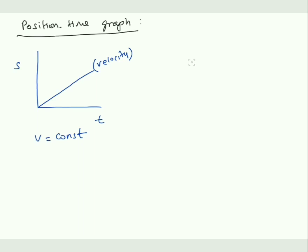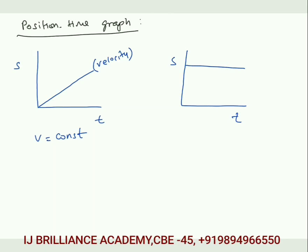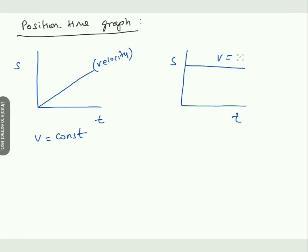Now I'm going to draw another position time graph. Here this is parallel to the x-axis. The slope again represents velocity, but in this case velocity will be zero.